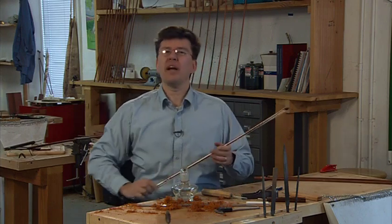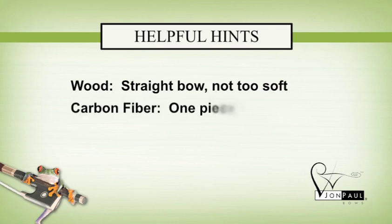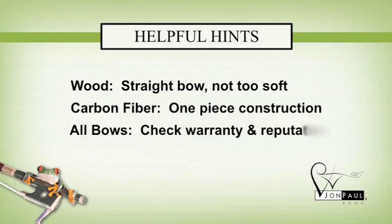Here are a few final hints when selecting a bow. If you choose a wood bow, Pernambuco, Ipe, or Brazil wood, make sure the bow is straight and isn't too soft or has a mushy feel. With carbon fiber, make sure the stick is one piece construction for durability. And with all bows, be sure to check the warranty and rely on businesses and bows with a good reputation.